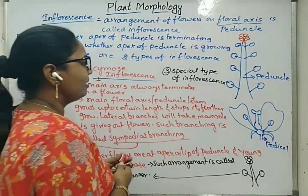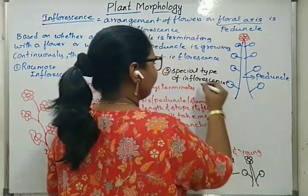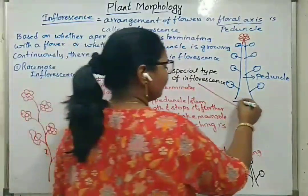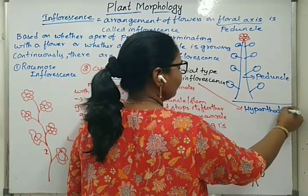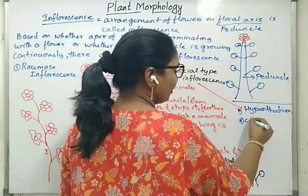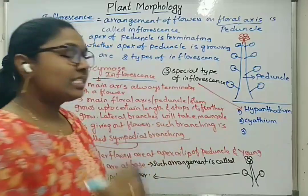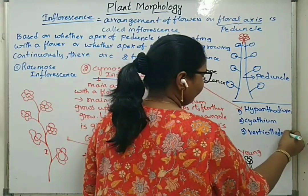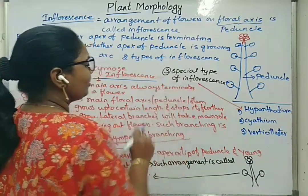Under special type of inflorescence, there are three other types. The first is hypanthodium inflorescence, the second is cyathium inflorescence, and the third is verticillaster type of inflorescence. So in total, based on whether the apex terminates with a flower or not, we have racimose and cymose types, plus the special type.